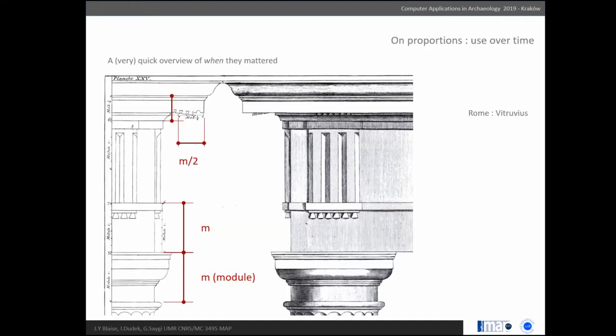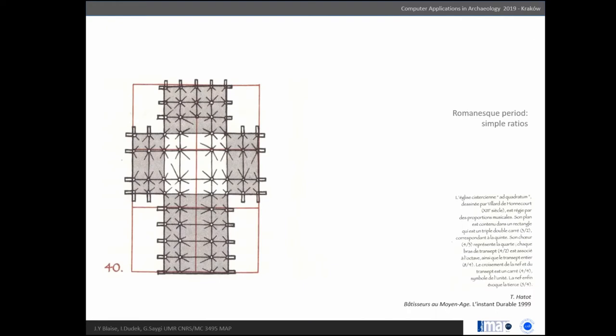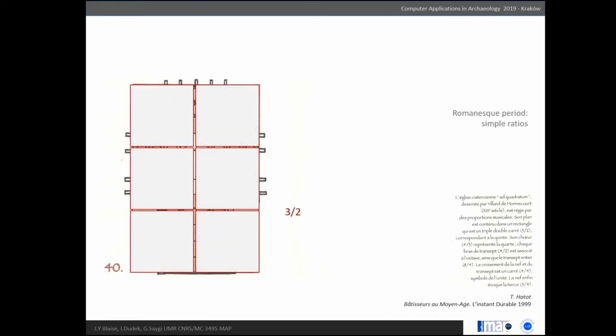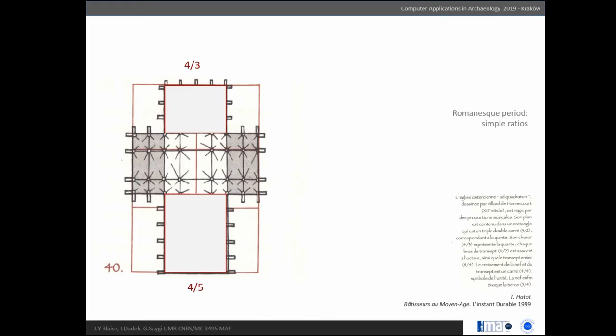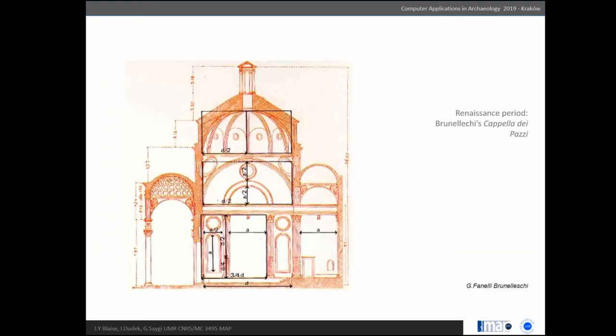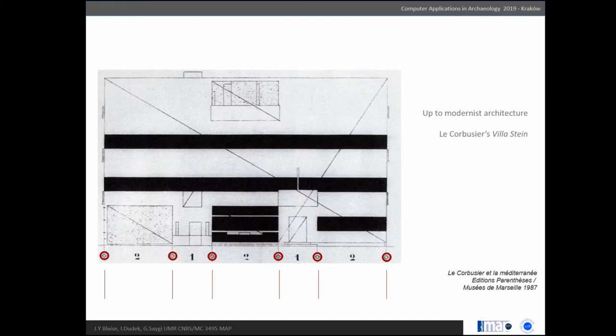In the history of architecture, proportion has mattered over time: from the Roman period with Vitruvius, through the Romanesque period with classic ratios used often in the Renaissance period, and of course up to the Modernist period. This is Le Corbusier's work, built on a rhythm of one-two, one-two. The concept of proportion goes through time in the history of architecture.